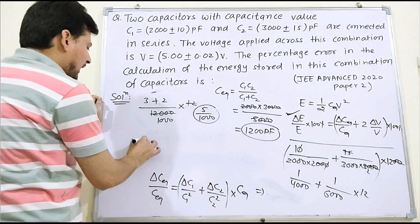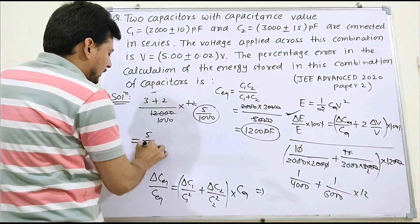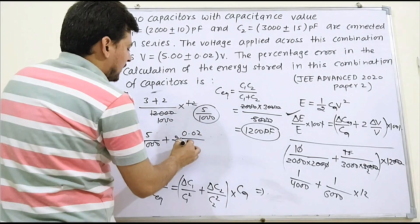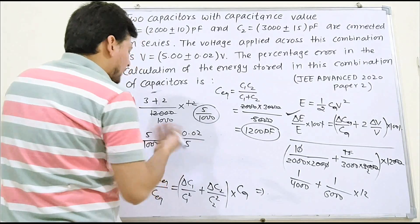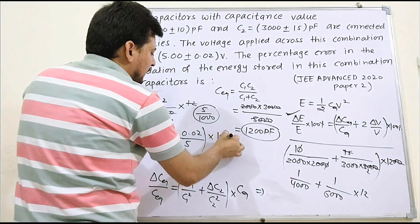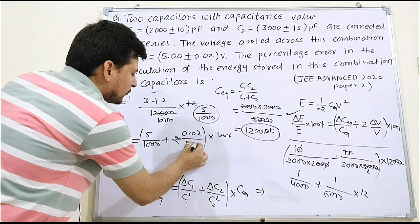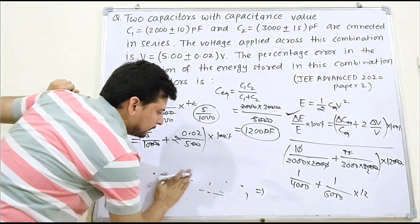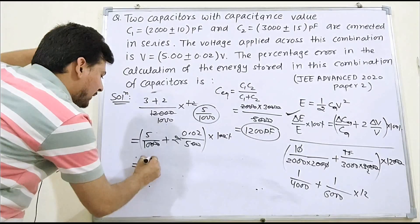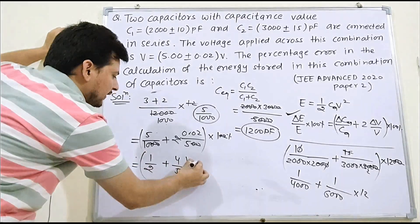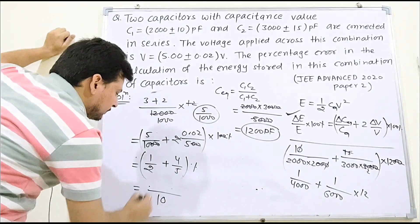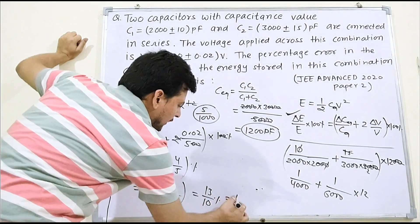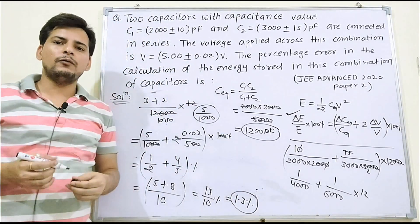So δC_equivalent / C_equivalent = 5/1000, which equals 5 by 10 = 1/2, and δV/V gives 4/5. Combining: (5 + 8)/10 = 13/10 = 1.3%. So the correct answer for percentage error in energy storage is 1.3 percent.